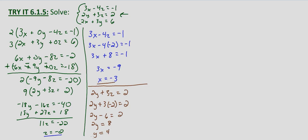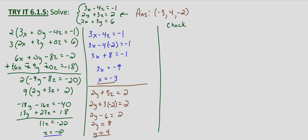So our tentative solution as an ordered triple is negative 3, 4, negative 2. Now we'll check our solution by substituting into all three equations. Using our first equation, 3x minus 4z equals negative 1: 3 times negative 3 minus 4 times negative 2. Negative 9 plus 8 equals negative 1. And we do end up with negative 1 equals negative 1, so it checks in our first equation.